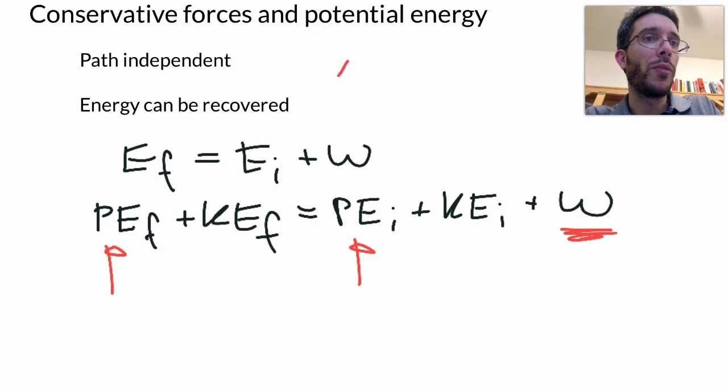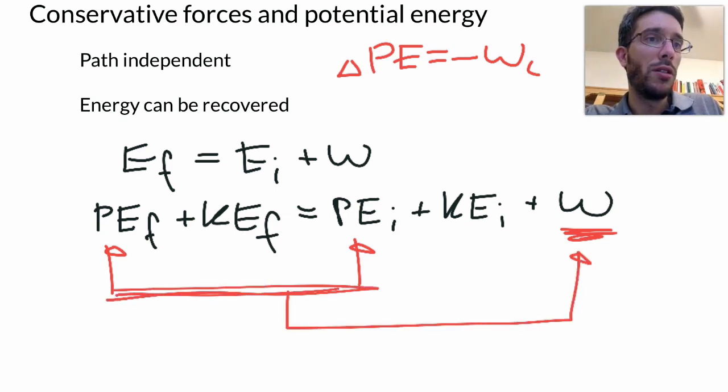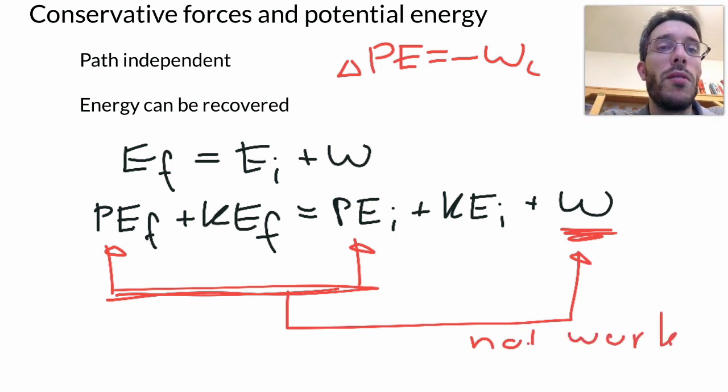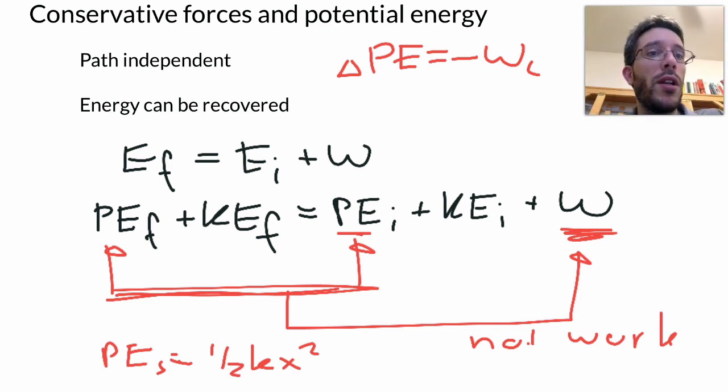Because remember the definition of potential energy was that the change in potential energy is minus the work done by the conservative force, which is attributed. So if you use the potential energy of gravity here, then do not use it in the work. Otherwise you will count it twice. The same with the spring potential energy. If you use the spring potential energy, well it's the formula for the spring potential energy by the way, PE_s is one half k x squared, very simple, spring constant times the displacement squared, gives you your potential energy stored in the spring. So if you use the potential energy of a spring, do not put the work done by the spring force or the elastic force in the same equation.